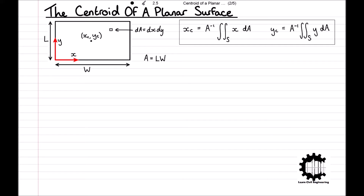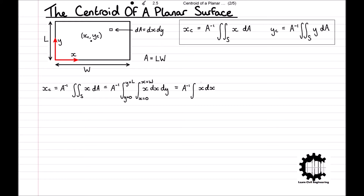The surface integrals in the equations correspond to positioning dA at all points XY on the surface. Using the equations, XC equals A to the power of minus 1 times the surface integral of X with respect to A, which can be expressed as A to the power of minus 1 times the integral of X with respect to X from 0 to W, and then with respect to Y from 0 to L. Because the rectangular surface has simple geometry with perimeter edges parallel to either the X or Y axis, the integral limits are constants, not functions of X or Y, and as a result the X integration can be done independently of the Y integration. Hence the integrals are separable.